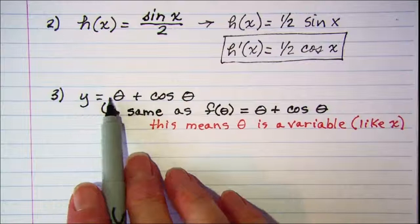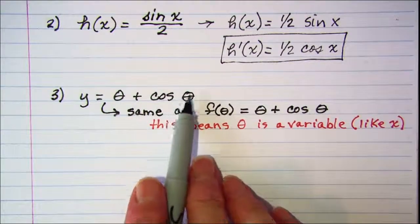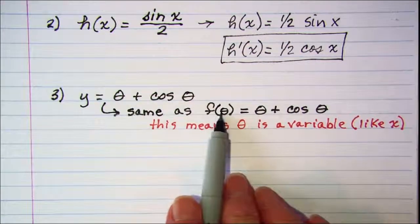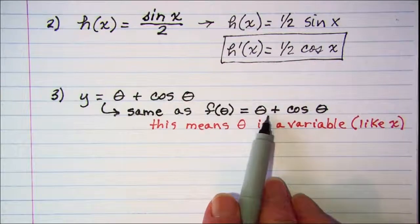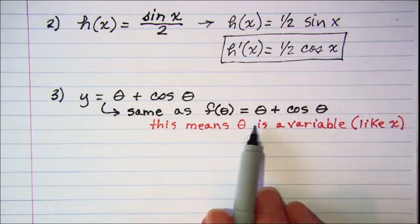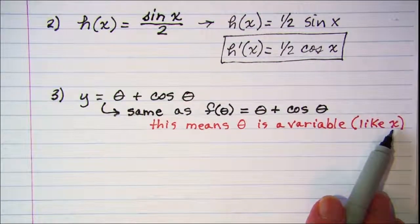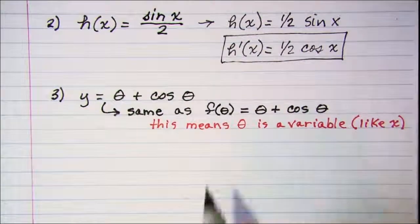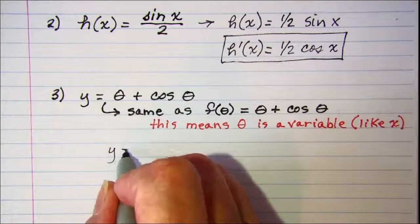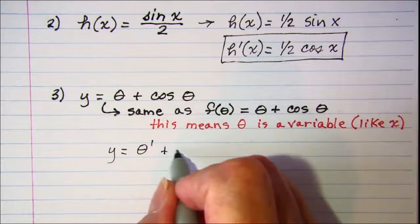This one we're told that y equals theta plus cosine theta. Now theta is our variable, so this is the same as saying f of theta equals theta plus cosine theta. This means theta is the variable, and we treat it just like we would the variable x. So we could write this, if we needed to, as y equals theta to the first power plus cosine theta.